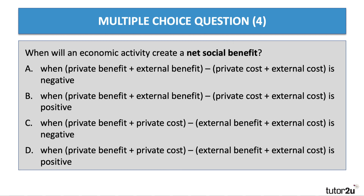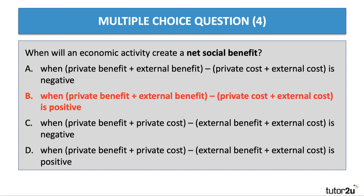Question 4: When will an economic activity create a net social benefit? The answer is when the social benefit — which is private benefit plus external benefit — is bigger than the social cost, which is private cost plus external cost. So the answer there is B.